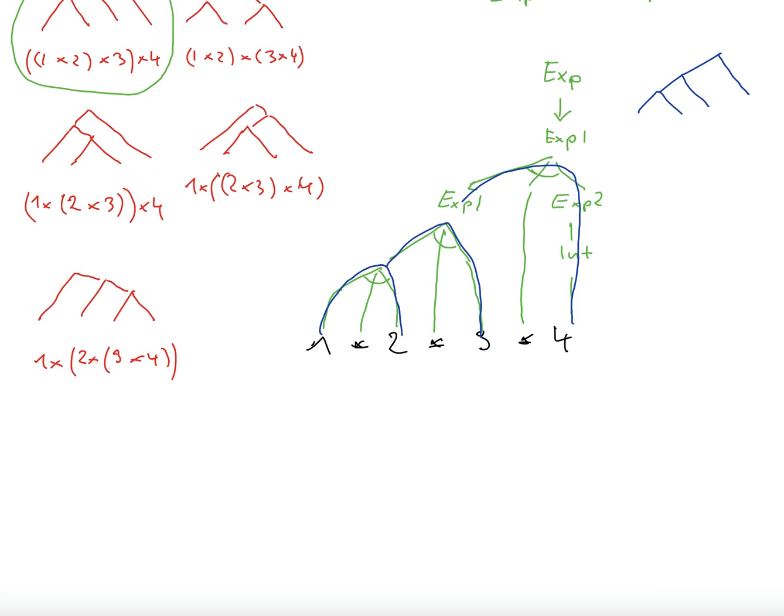So just to summarize what we learned is that in the green grammar, the parentheses are always the ones to the left. So we have one times two times three times four. That's the only way to put the parentheses,